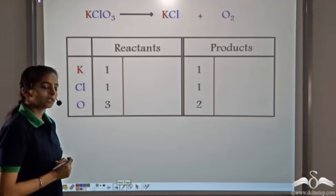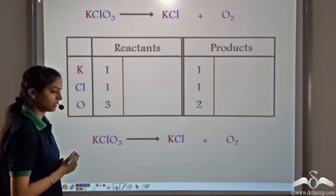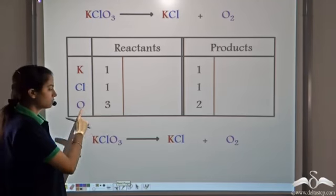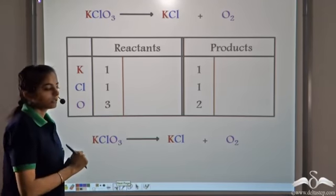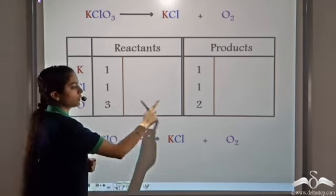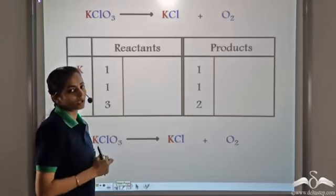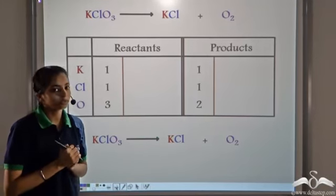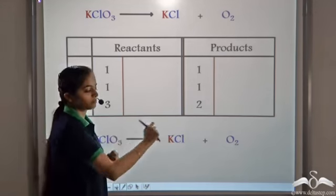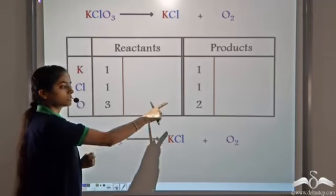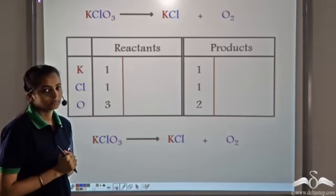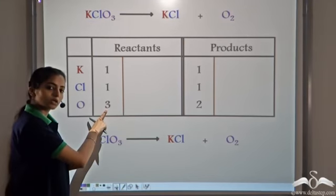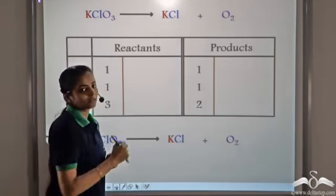Now if we look at the equation, we see that Potassium and Chlorine are balanced but Oxygen is not balanced. There is a difference of 1 atom on the reactant and the product side. We know we always balance the species which is present alone in the end. Here Oxygen is present alone and is the only species which is not balanced — we have 3 atoms on the reactant side and 2 atoms on the product side.